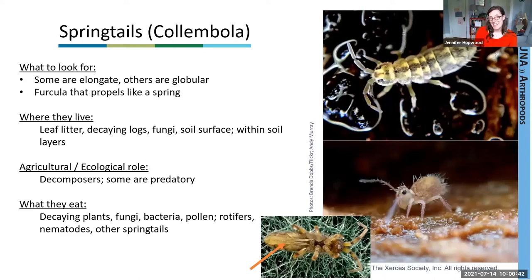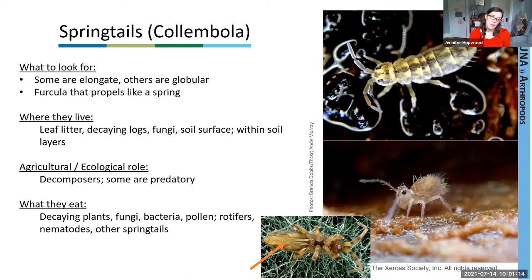Next up are springtails, also known as collembola. Their common name comes from the way they propel themselves — they have a structure called a furcula that's kept under tension, which flings them into the air to spin, turn, or jump, important for escaping predation. Those active above the surface or in the upper leaf litter layer are much more mobile. Some collembola live in deep soil and have lost their spring and even their eyesight because they never need to see. Springtails contribute to decomposition by fragmenting plants and fungi, and some are predatory.